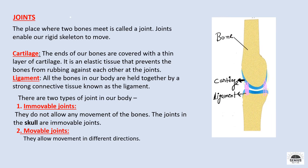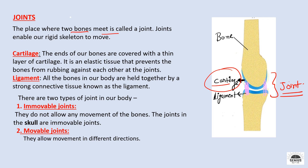Joints. The place where two bones meet is called a joint. Joints enable our rigid skeleton to move. The ends of our bones are covered with a thin layer of cartilage — an elastic tissue that prevents the bones from rubbing against each other at the joint. All the bones in our body are held together by a strong connective tissue known as a ligament.